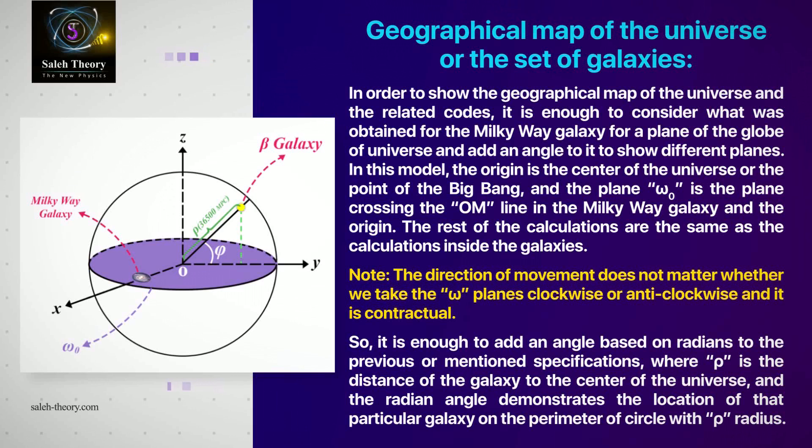In this model, the origin is the center of the universe or the point of the Big Bang, and the plane omega zero is the plane crossing the OM line in the Milky Way galaxy and the origin. The rest of the calculations are the same as the calculations inside the galaxies.